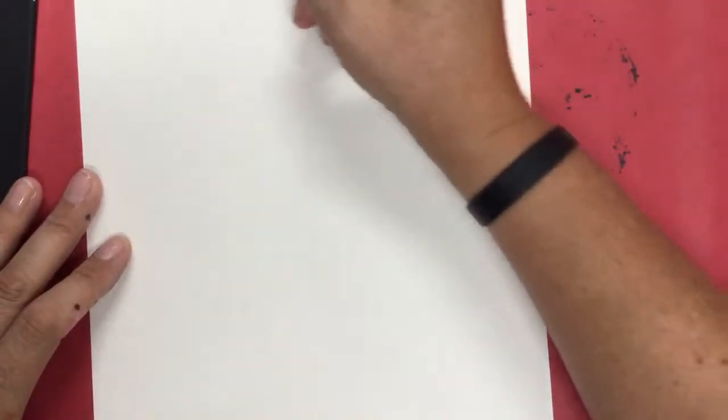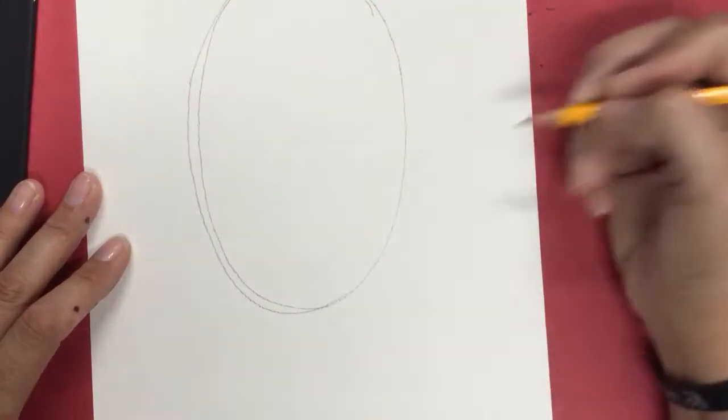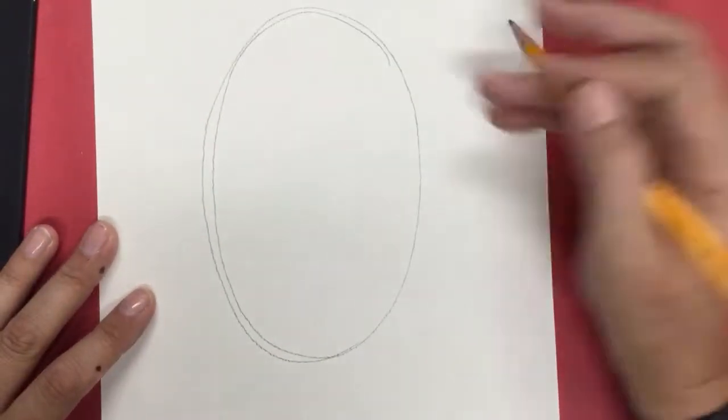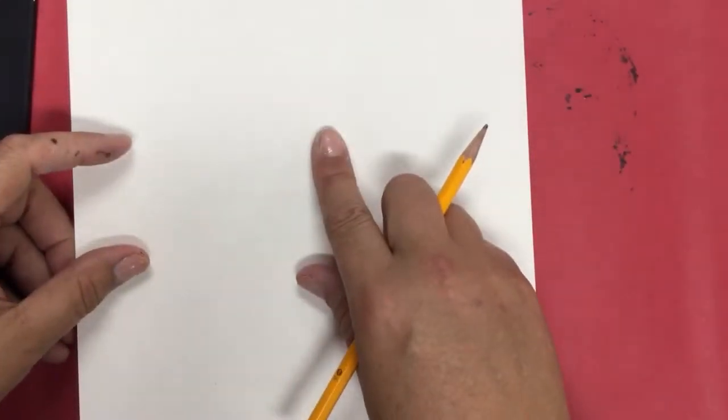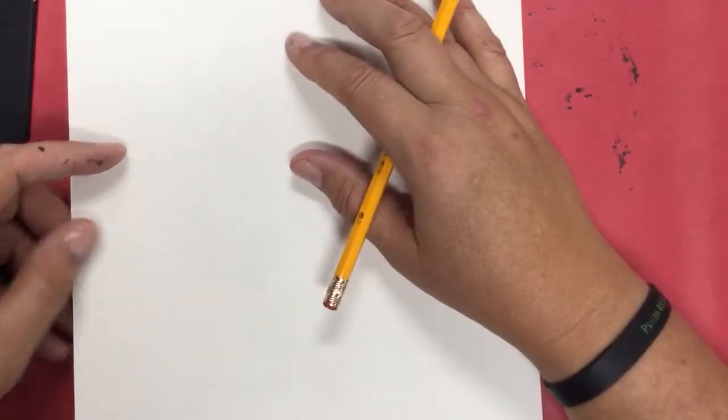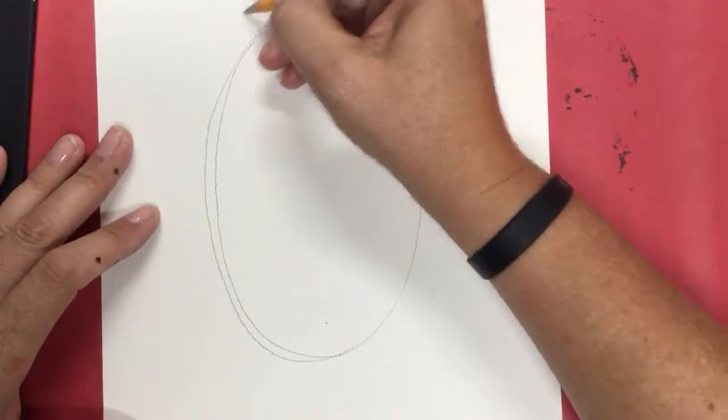So when you get your piece of paper, this is a beautiful, very expensive piece of watercolor paper just for you, and I want for you to draw an oval. If the first time you draw the oval and you absolutely hate it, that's fine, you can flip your paper over and use the other side.